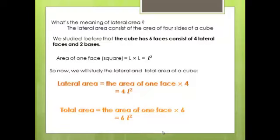Our lesson today is about the lateral area and the total area of a cube. The cube has six faces: four lateral faces and two bases. The lateral area consists of four faces of a cube. Since a cube is made up of squares, the area of one face equals side times side. We write the side as L, so the area of one face equals L squared.